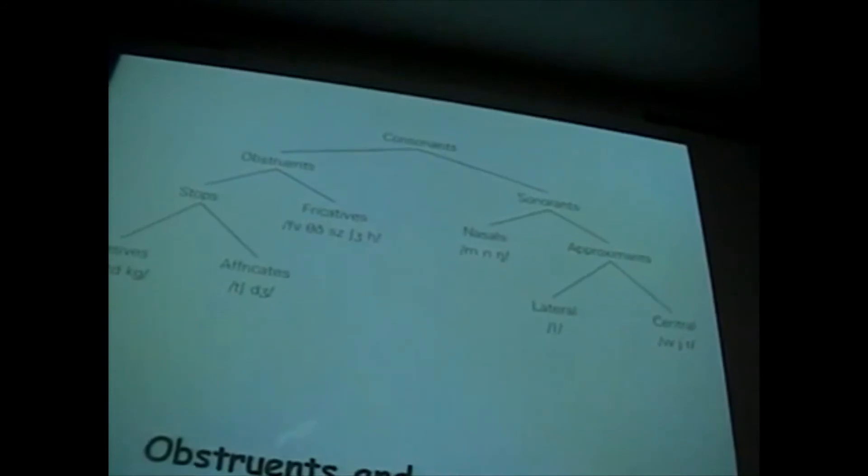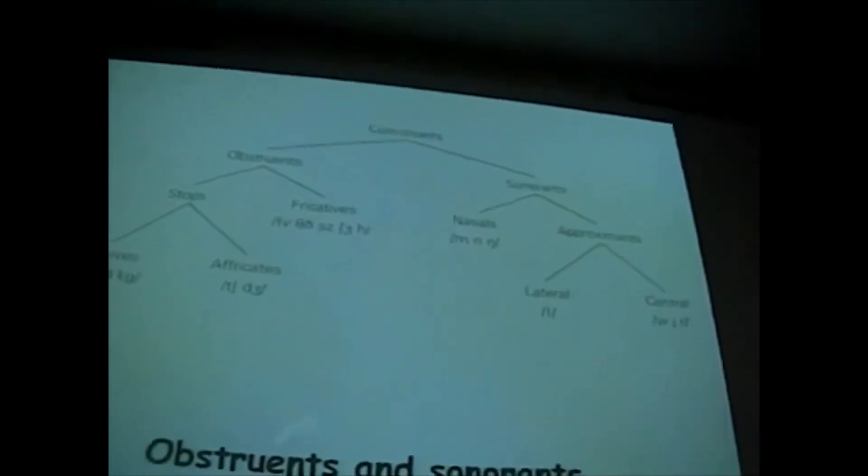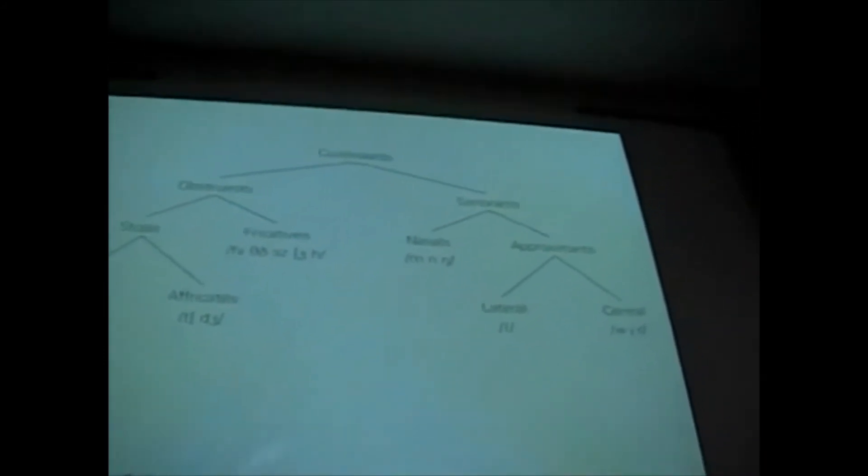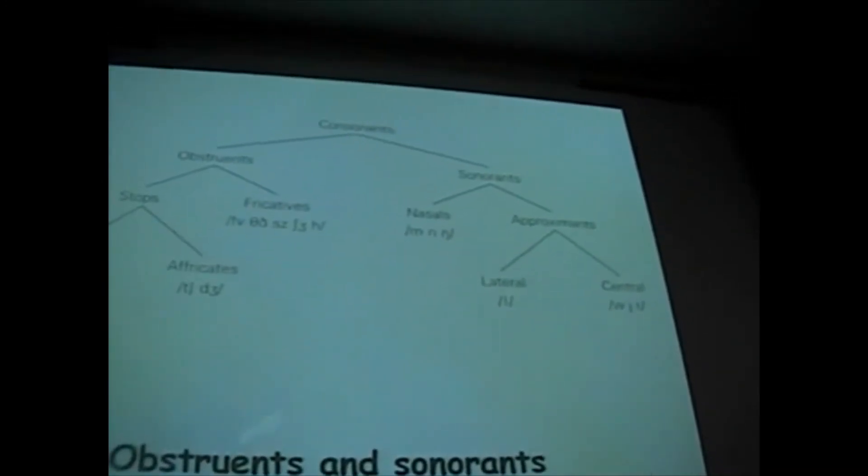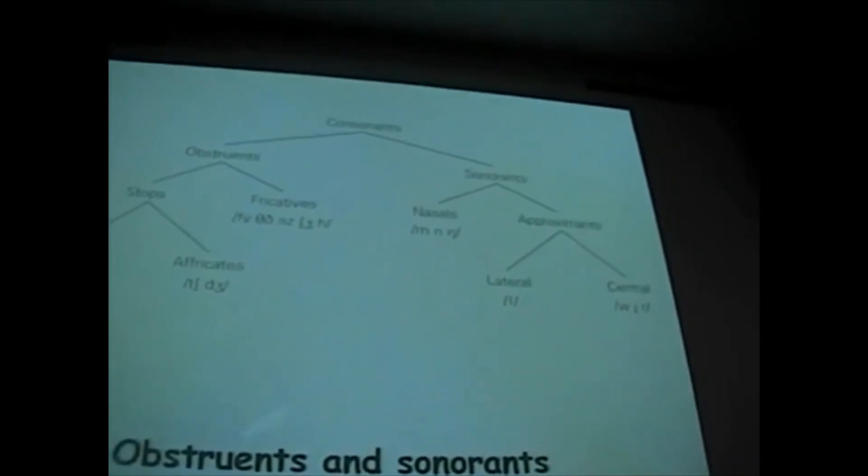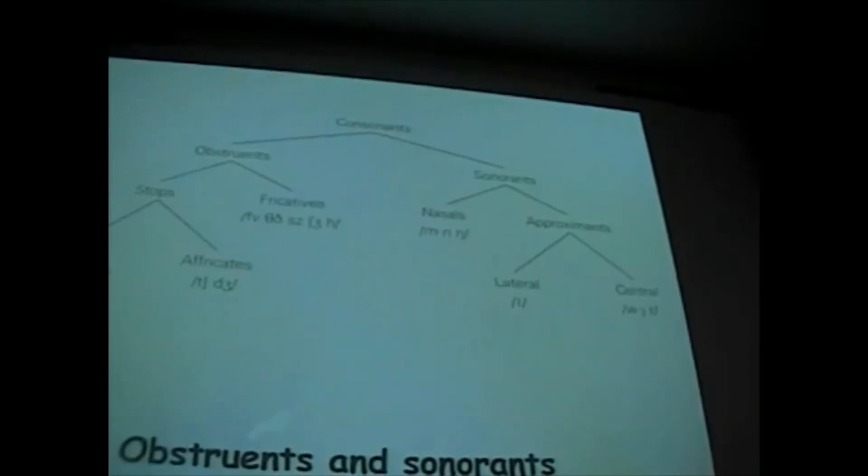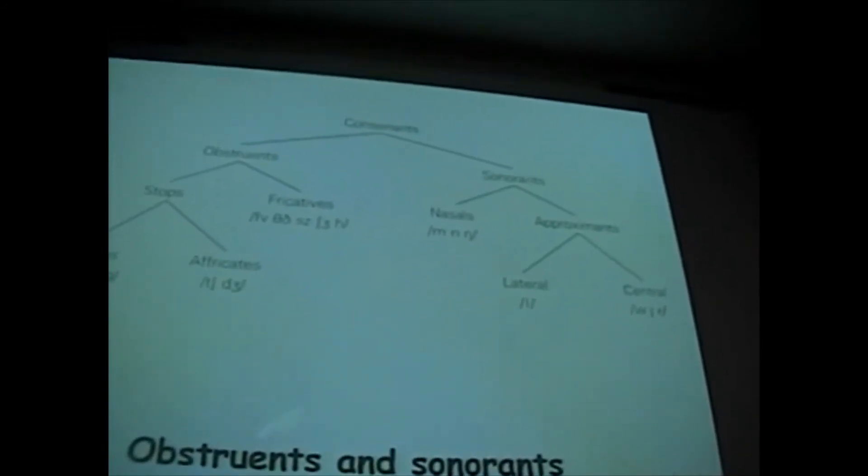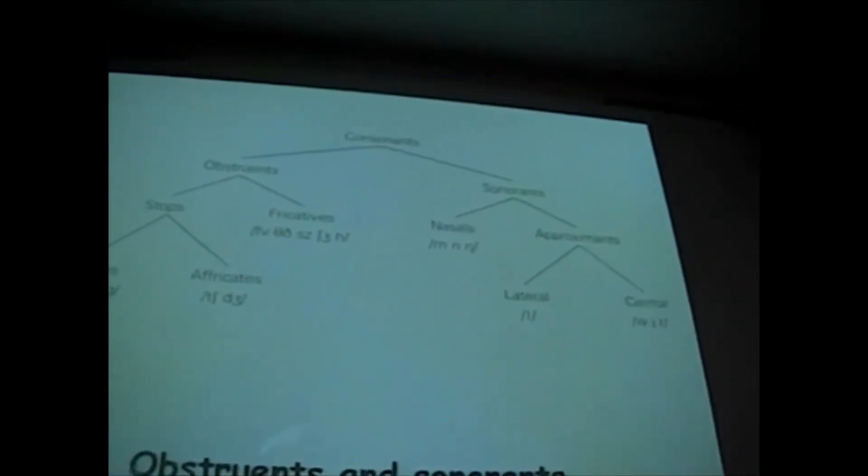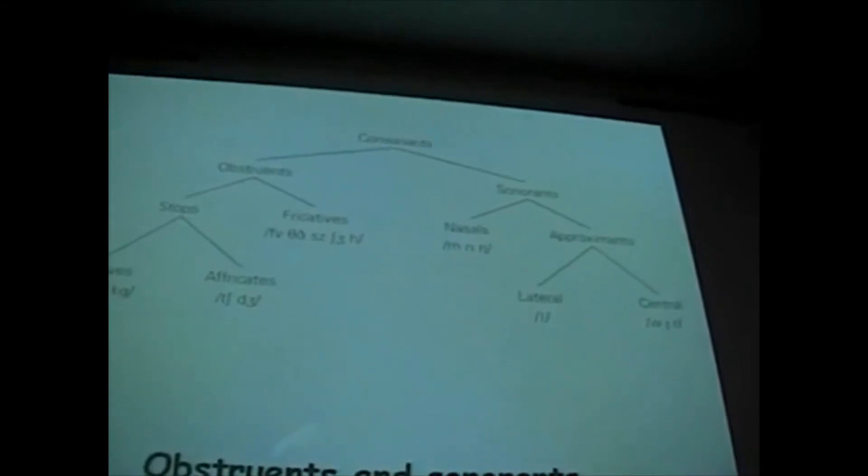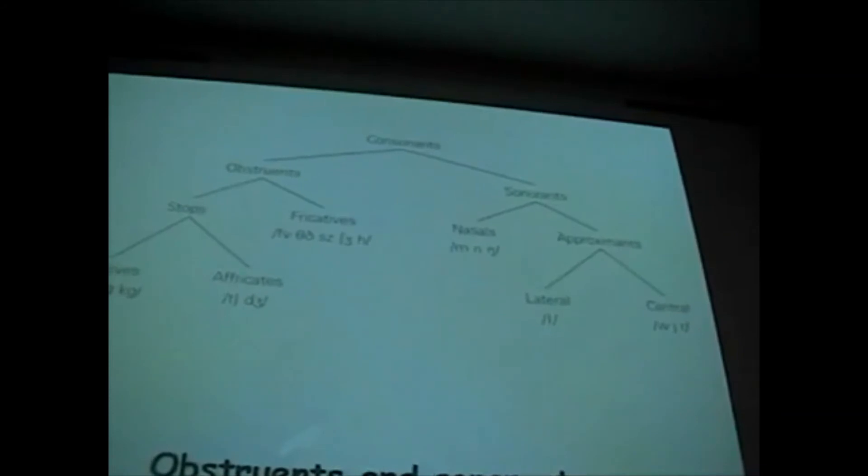You have the consonants, you can distinguish on this basis between obstruents and sonorants. Obstruents is a term to cover stops and fricatives. The fricatives are categorized there, but the stops can be further categorized into plosives and affricates. If we take the sonorants, sonorants covers sounds which are sonorous, which have a lot of loudness attached. They're really very like vowels, they carry the acoustic information. And there we can divide between nasals m, n, and ng, and then we also have other types of approximant, so the lateral L, and the central approximants W, Y, and R.